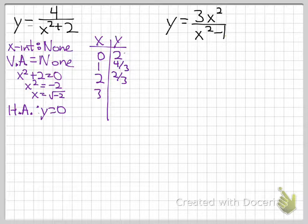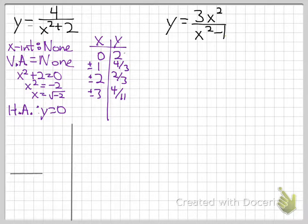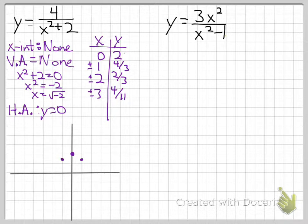Drawing the axes with y equals 0 as asymptote, we plot (0, 2), (1, 4 thirds) and (negative 1, 4 thirds) on either side, (2, 2 thirds), and (3, 4 elevenths). We can see the graph gets closer and closer to the asymptote as x increases, giving us our general graph sketch.